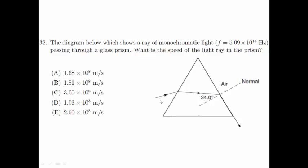As you can see from this diagram here, the angle 34 degrees is actually the critical angle of this glass prism. Therefore, we can write the following equation relating the refractive index of this prism and the critical angle as shown here.